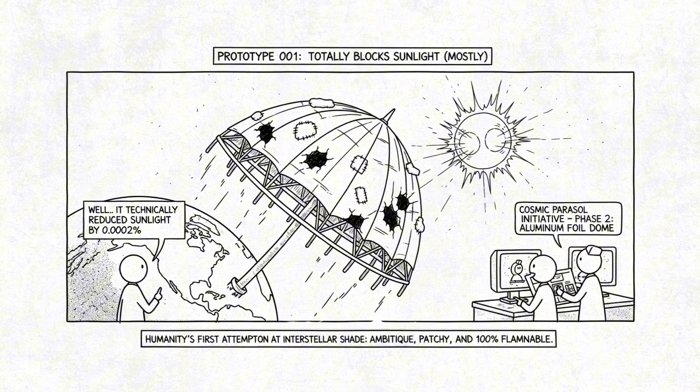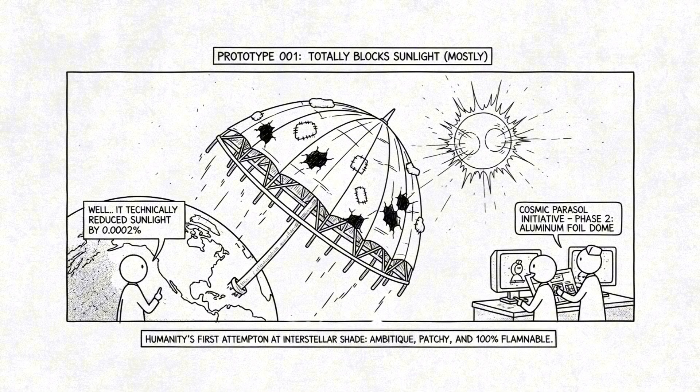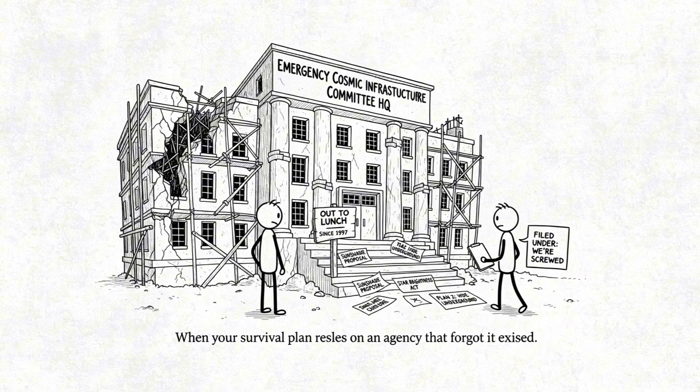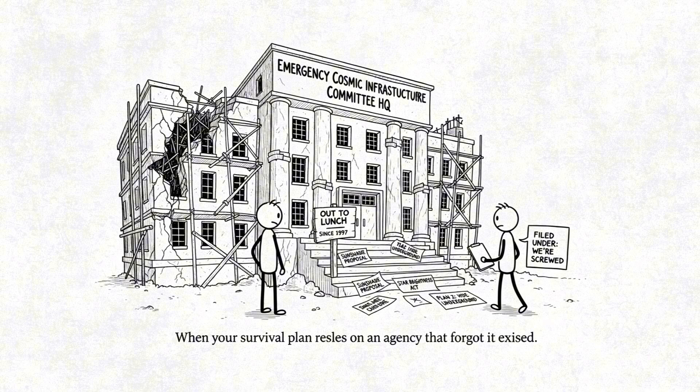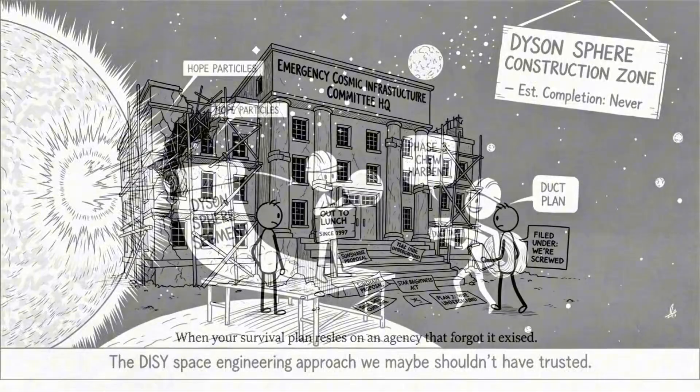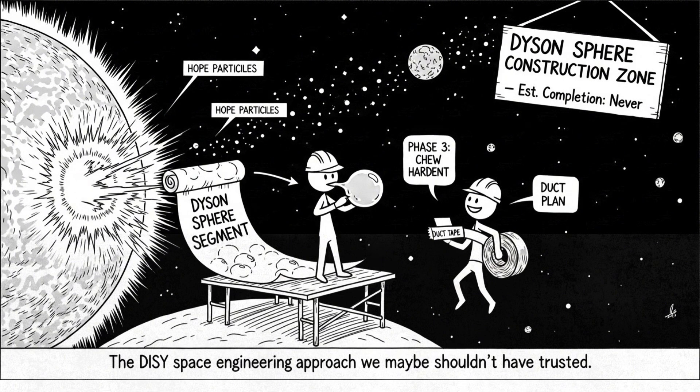Now, if you're thinking, hey, can't we just install a giant interplanetary sunshade? Great idea. Please file that suggestion with the Emergency Cosmic Infrastructure Committee right after Build Dyson Spheres Using Bubblegum and Hope.